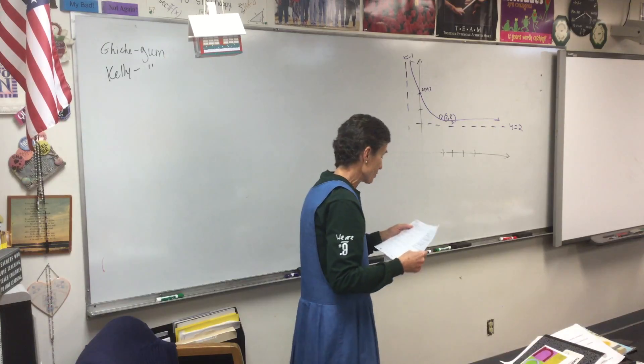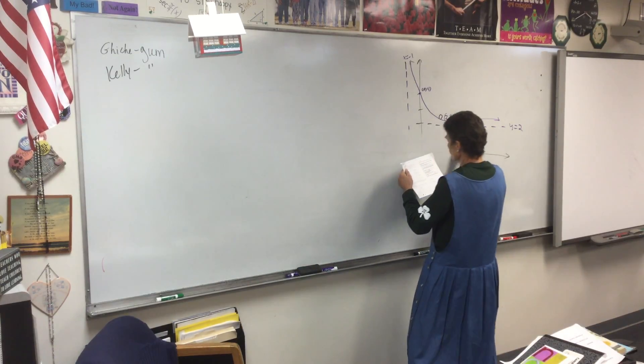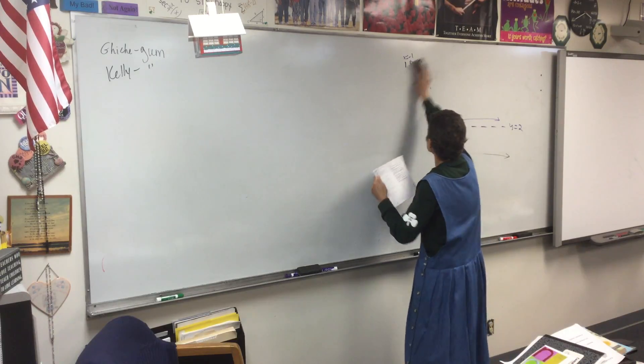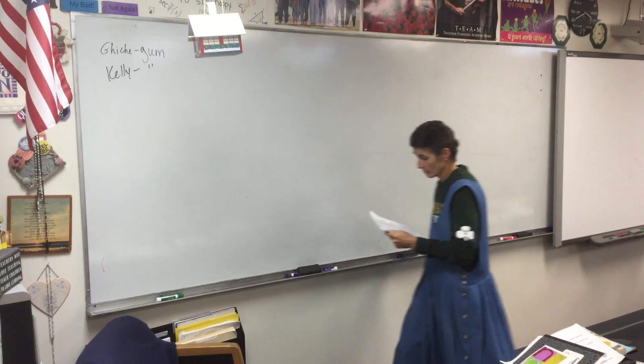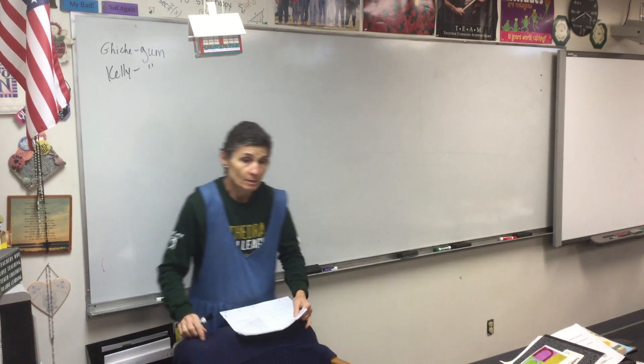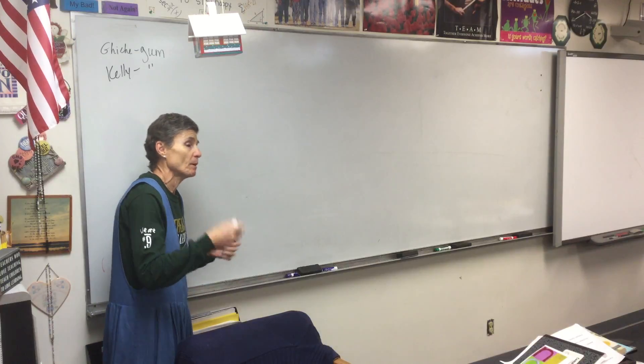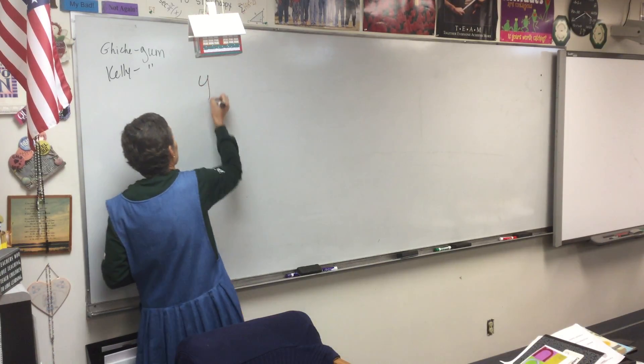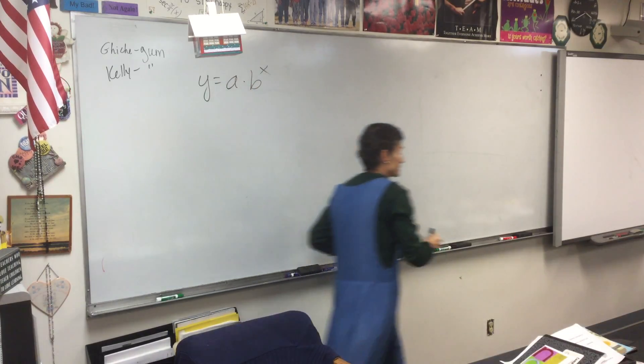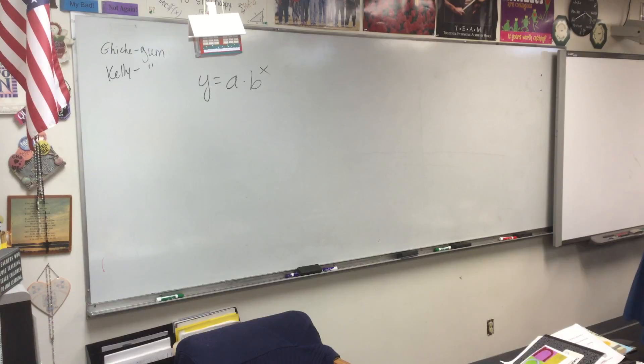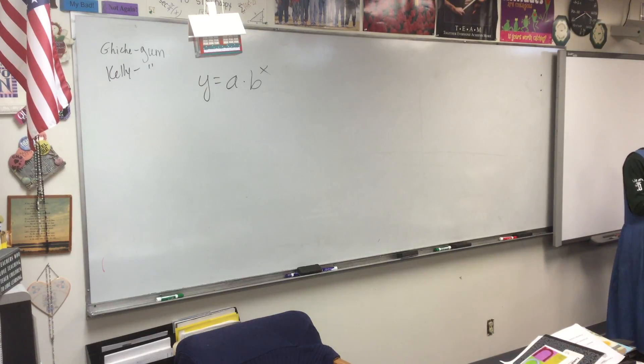Write the equation of the exponential function containing 0, 2, and negative 1, 3. Exponential function. The first thought that pops into your head: Y equals A times B to the X. That's the first thing that pops into your head. Now what? Plug in the point that has the zero in it, right?